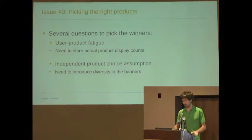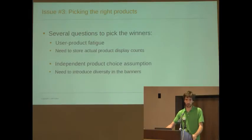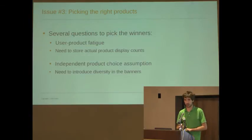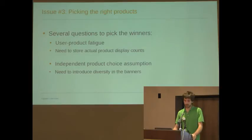Another linked problem is the independent product choice assumption. We pick the top-end items from the ranking, but these items may be extremely similar — way too similar, actually. If a user has seen an iPhone, we may recommend the new iPhone and recommend it several times across the two spots. Randomization helps you a lot with that. But we still have plans to improve this in the future.